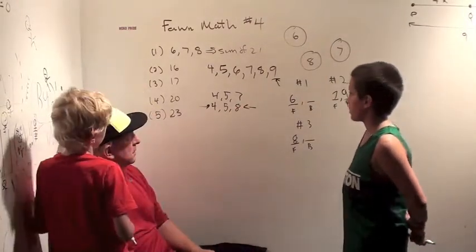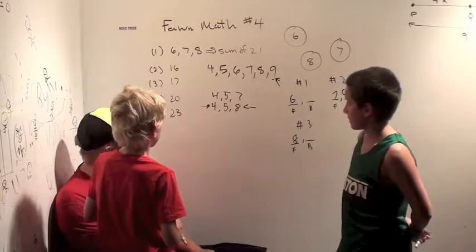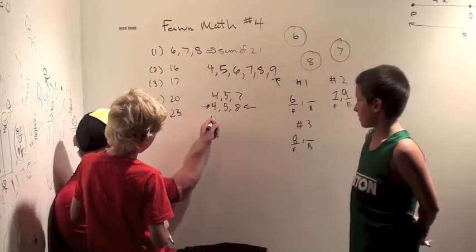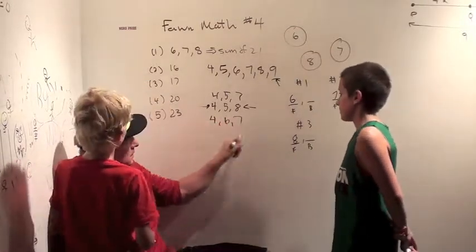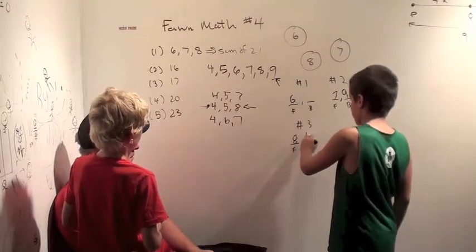Maybe there is a four, six, seven. Four, six, seven. Four plus, yeah, that works. But four is not paired with six or seven, so four has to be with eight. Okay.